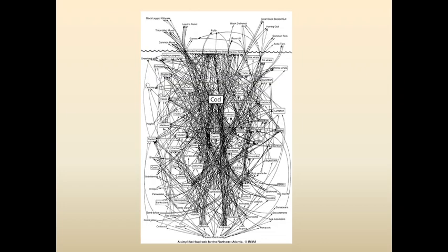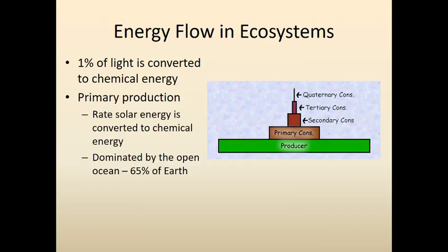So a food web should really look more like this — all these really complicated interactions that are hard to tease apart, but that's the reality of the system. We can think about these different roles — from producer to consumer to secondary consumer to tertiary consumer and so forth — as describing how energy flows through a system.